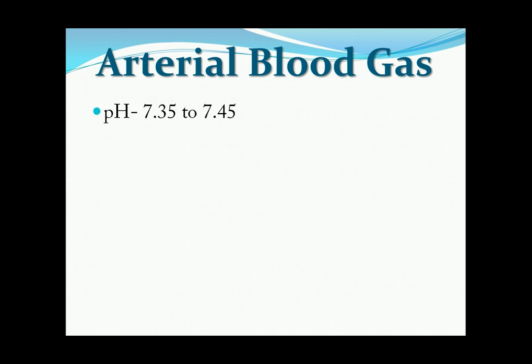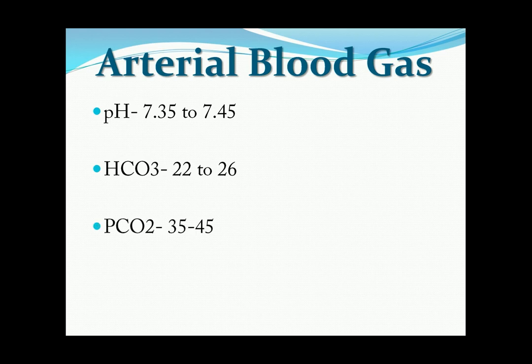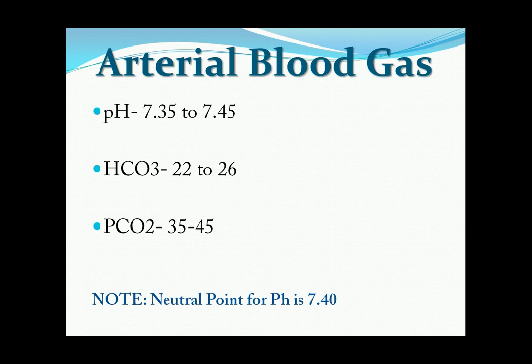pH: 7.35 to 7.45. HCO3: 22 to 26. PCO2: 35 to 45. Note, our neutral point for pH is 7.40. This will be your basis if the given pH is normal. I will let you understand this when I give different examples. Again, you need to memorize this.